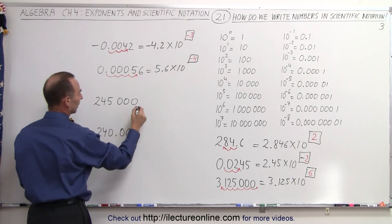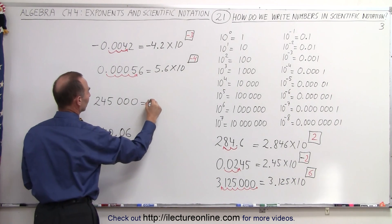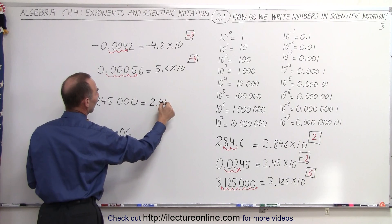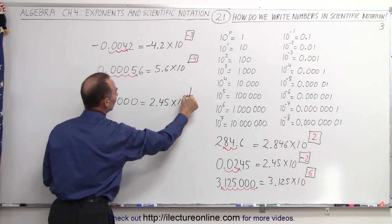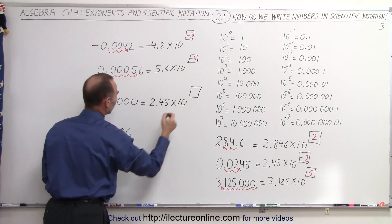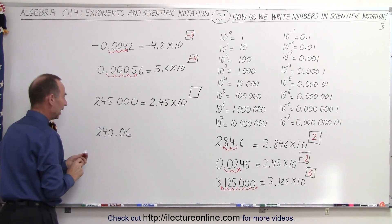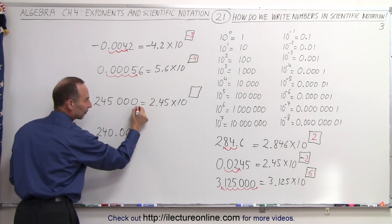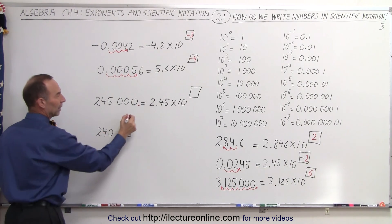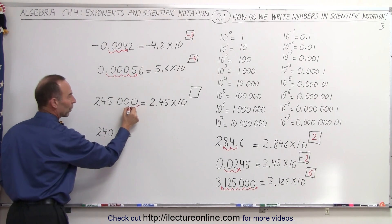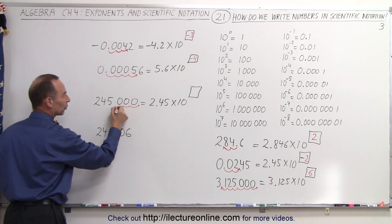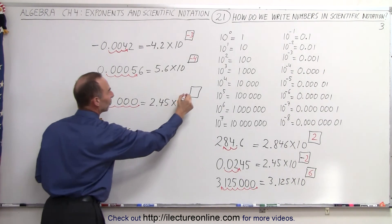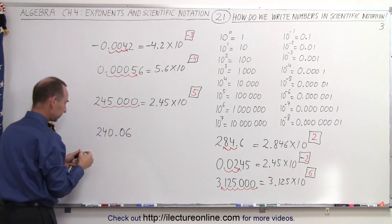On the next one, this is going to be written as 2.45 times 10 to some exponent. And here, even though we don't write the decimal place, it's right there. We have to move 1, 2, 3, 4, 5 spots. So we write the number 5 there.